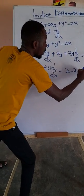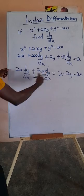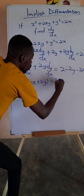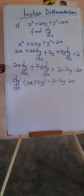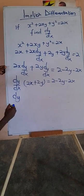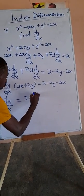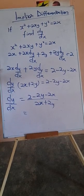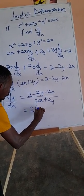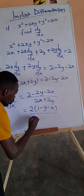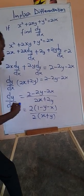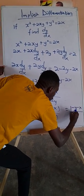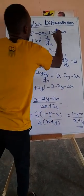We move the 2x term to the other side. Then dy/dx is common, so we factor it out: dy/dx times (2x plus 2y) equals 2 minus 2y minus 2x. We divide both sides by (2x plus 2y). We can factor out 2 from numerator and denominator — numerator gives 1 minus y minus x, denominator gives x plus y. The 2 divides out, so dy/dx equals (1 minus y minus x) all over (x plus y). This becomes our gradient function.